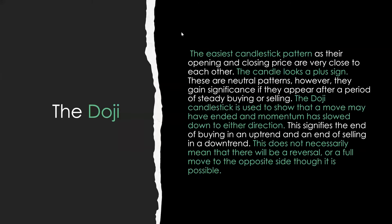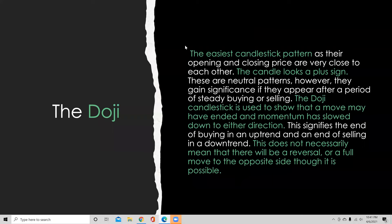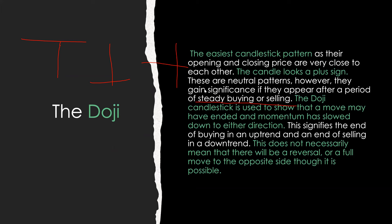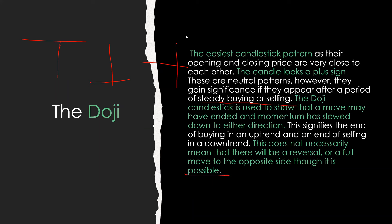First, the doji. The doji is the easiest candlestick pattern — openings and closings are very close to each other. The candle looks like a plus sign. They're neutral patterns; however, they gain significance if they appear after a period of steady buying or selling. The doji is used to show that a move may have ended and momentum has slowed down. This signifies the end of buying in an uptrend and the end of selling in a downtrend. It doesn't necessarily mean there will be a full reversal, but it's possible. This candlestick analysis is just a piece of the puzzle.